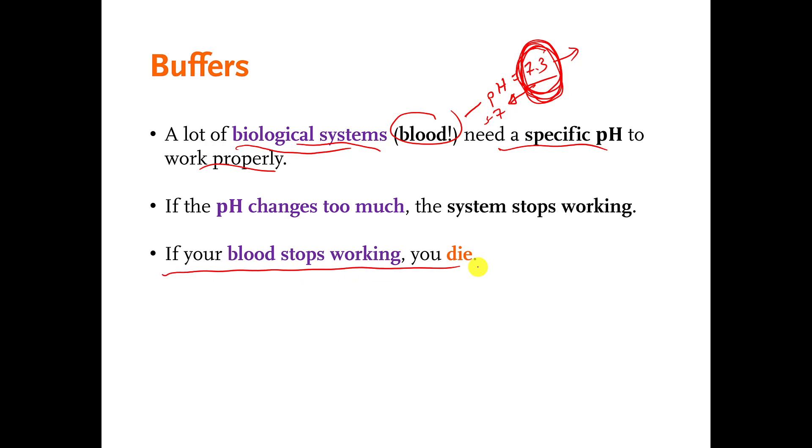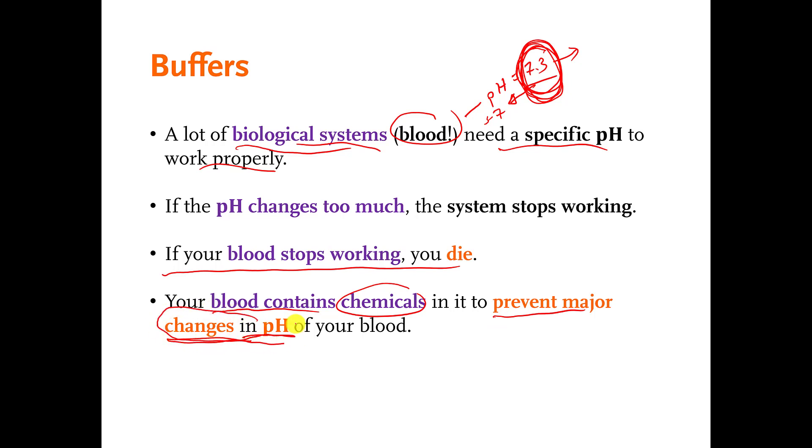Like I said, if your blood stops working, you're going to end up dead. Your blood contains chemicals that are dissolved in it that make it difficult. Those chemicals that are dissolved in your blood make it difficult to change the pH of your blood very much. And so those chemicals are basically there to keep you alive in case there are things that end up in your blood that try to change the pH of your blood away from 7.3. Those materials that are dissolved in your blood that make it hard to change the pH, they're called pH buffers. And that's what we're talking about here.